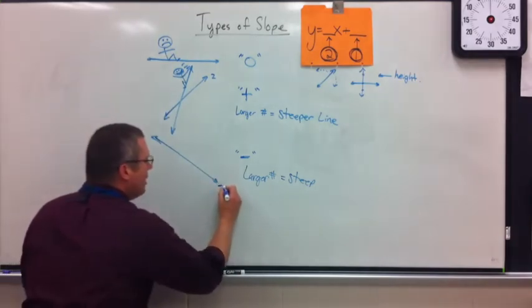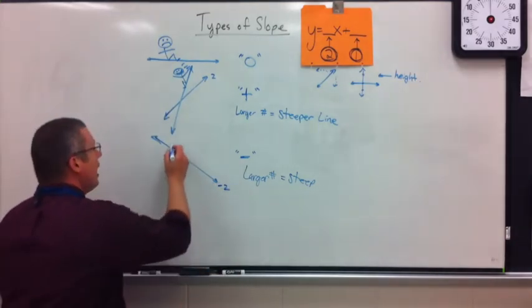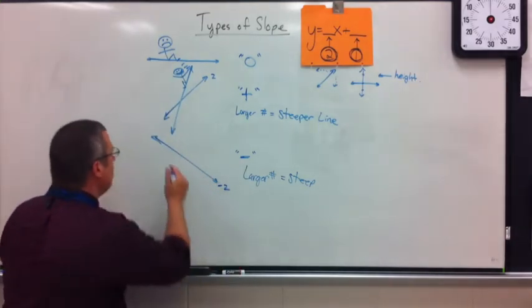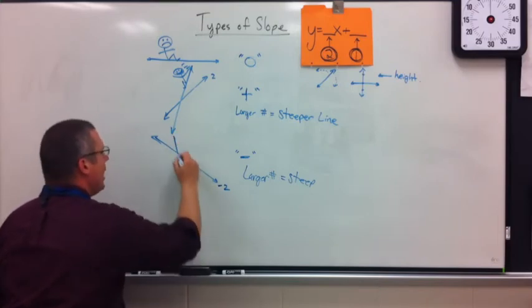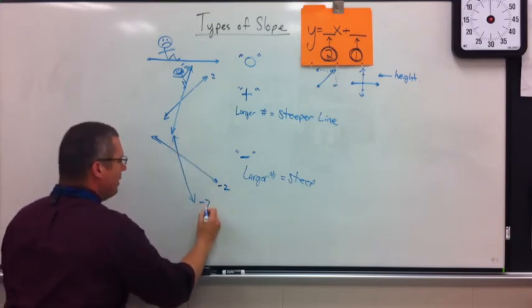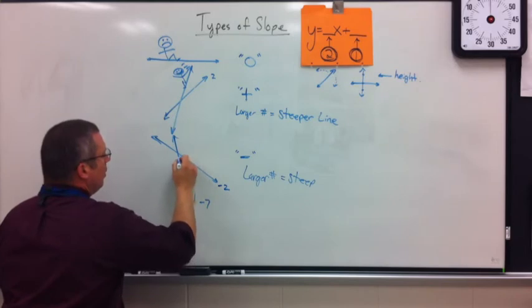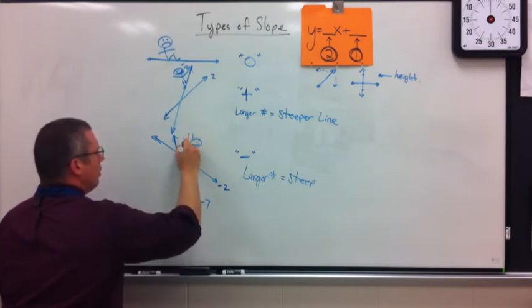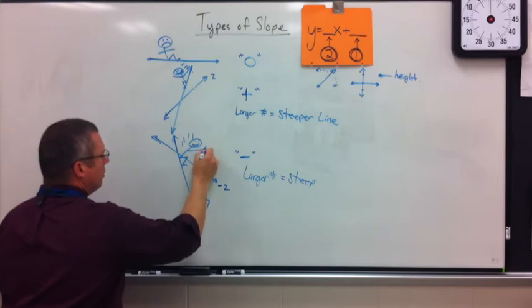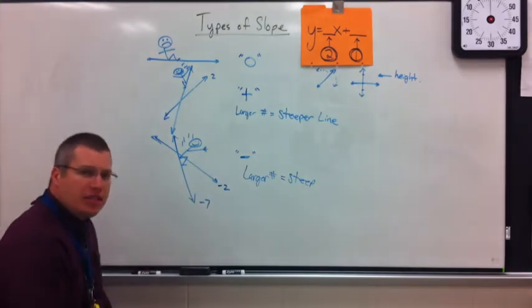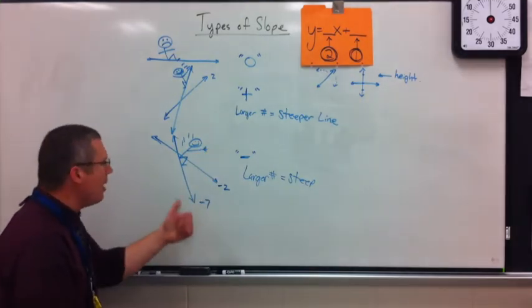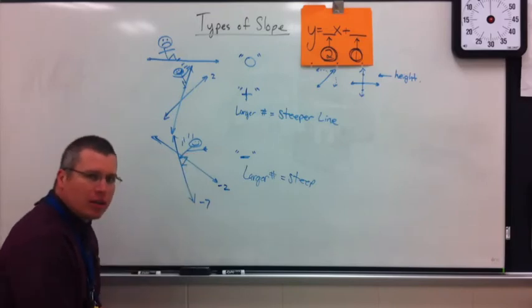So again, this could be a negative two. I could make this more fun, so to speak, by making it a larger number. This could be negative seven. And again, the steeper it is, the higher the number it is, the more fun it is.